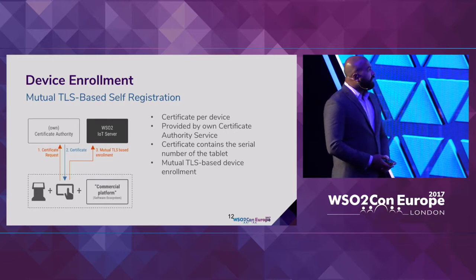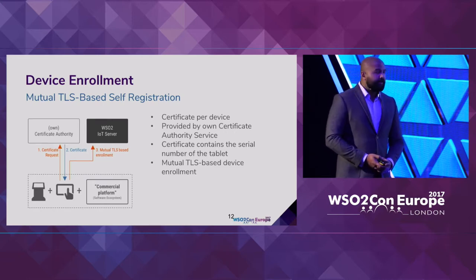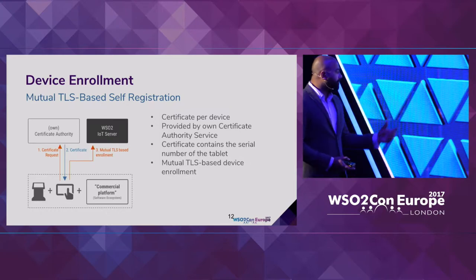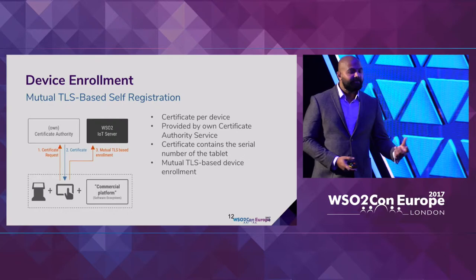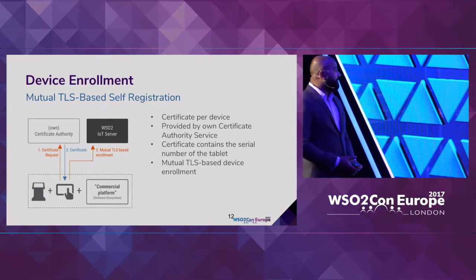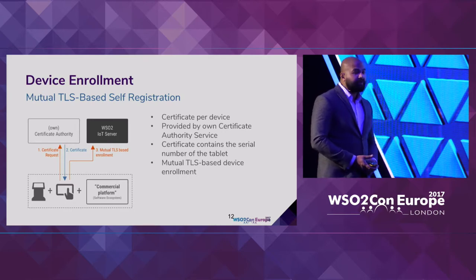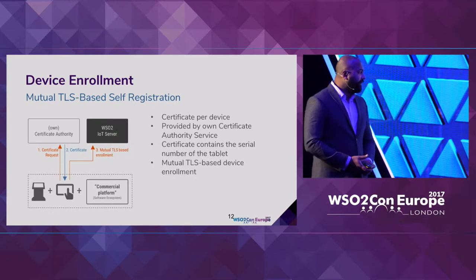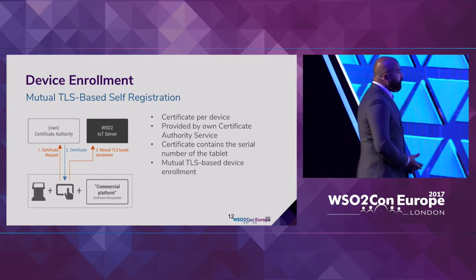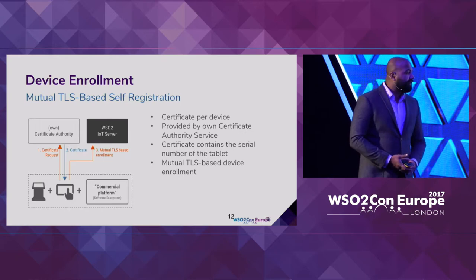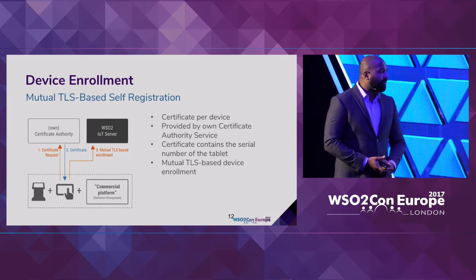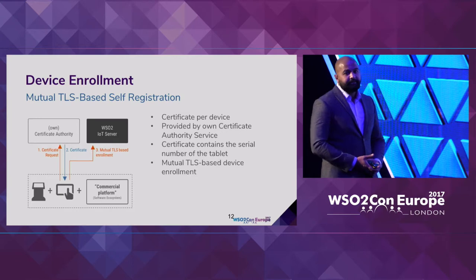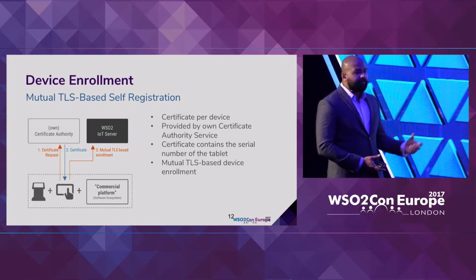For device enrollment, they have their own certificate authority service, which the device combination connects to on startup. The certificate authority sends a certificate including the device serial number, and they use mutual TLS-based enrollment against serial numbers — a kind of self-registration process. After that, devices can continuously communicate with WSO2 IoT server.